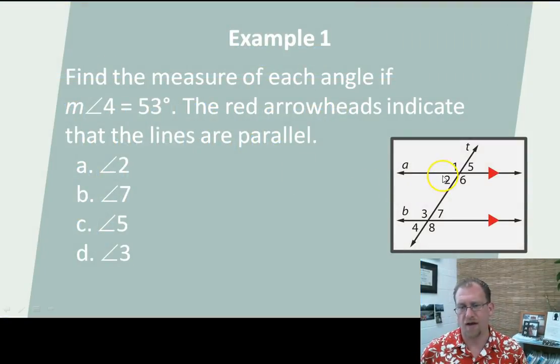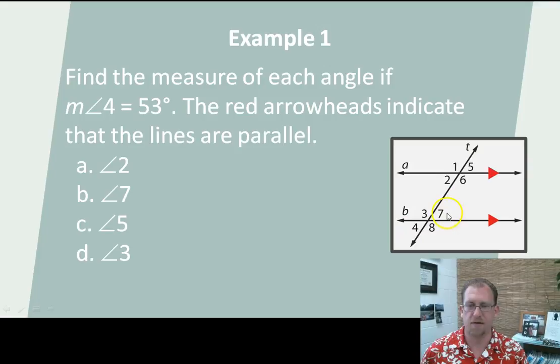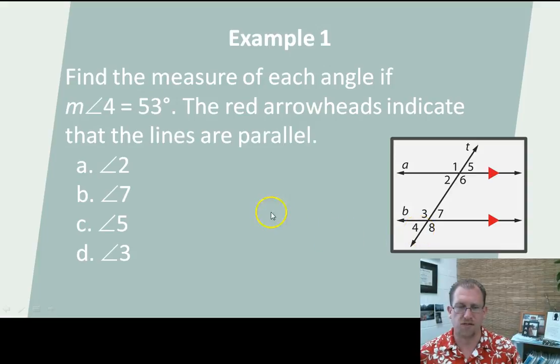So if line A and line B are parallel, and they're cut by a transversal, then one and three need to be congruent, two and four need to be congruent, six and eight need to be congruent, and seven and five need to be congruent. Corresponding angles are congruent. So find the measure of each angle if measure of four is 53 degrees. Here's 53 degrees. What's two?